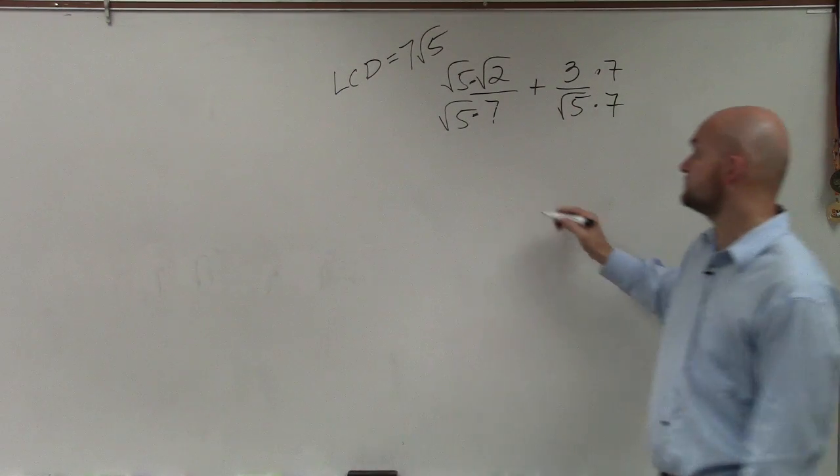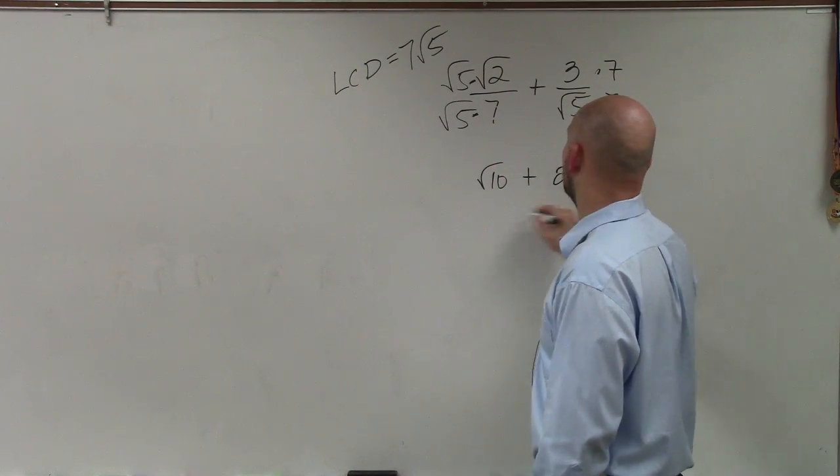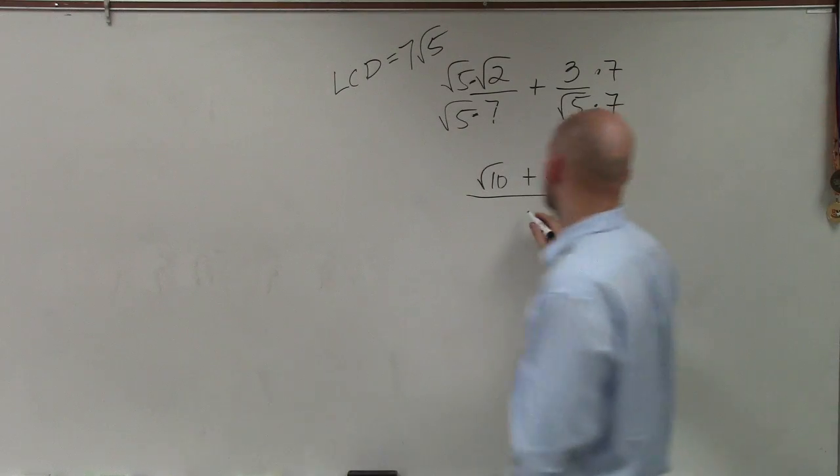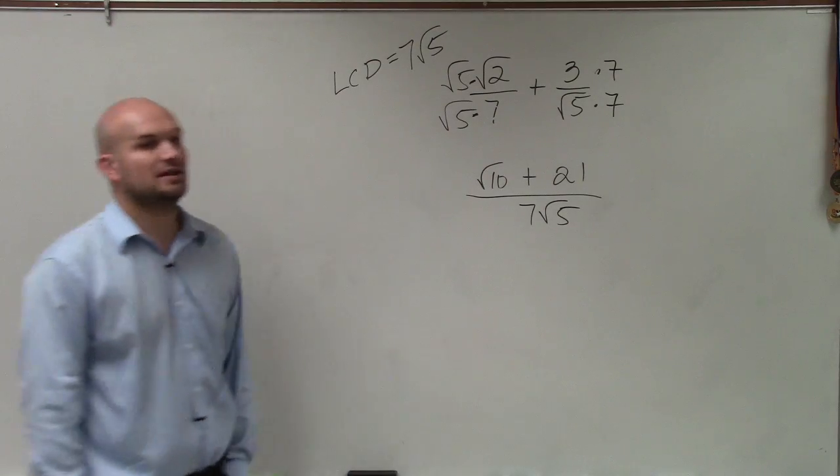Now I multiply: √5 times √2 is √10, plus 3 times 7 is 21, divided by 7√5, which is going to be 7√5. So that would be your final answer.